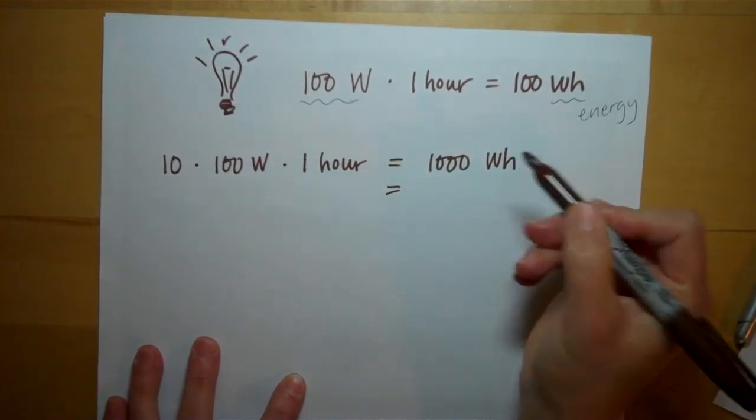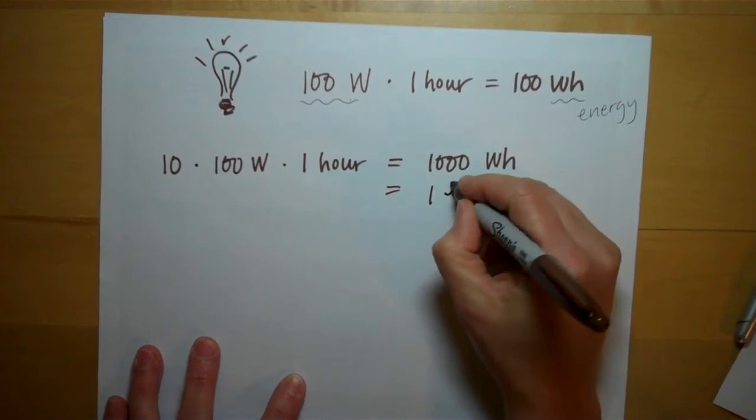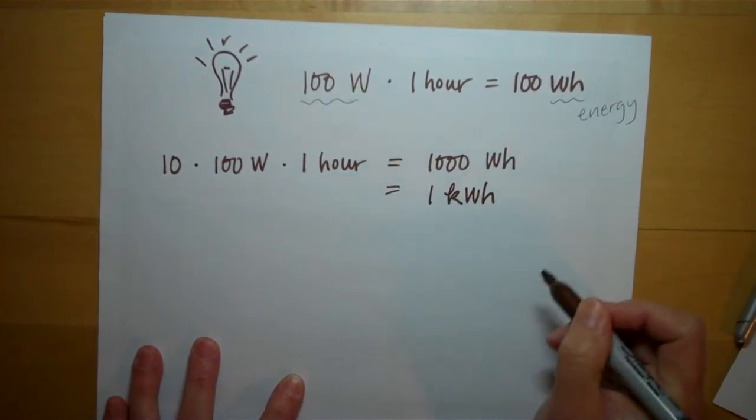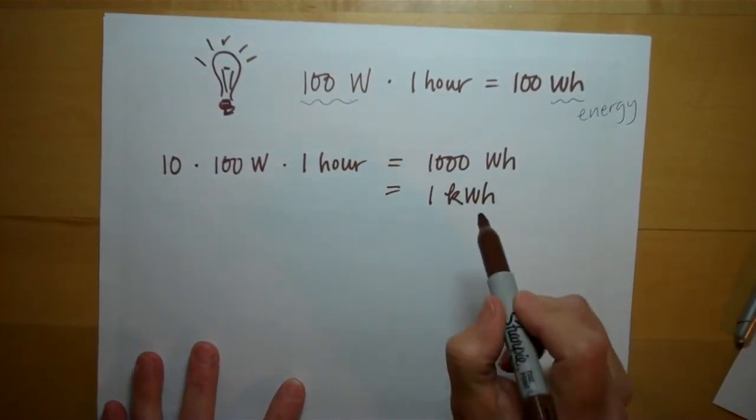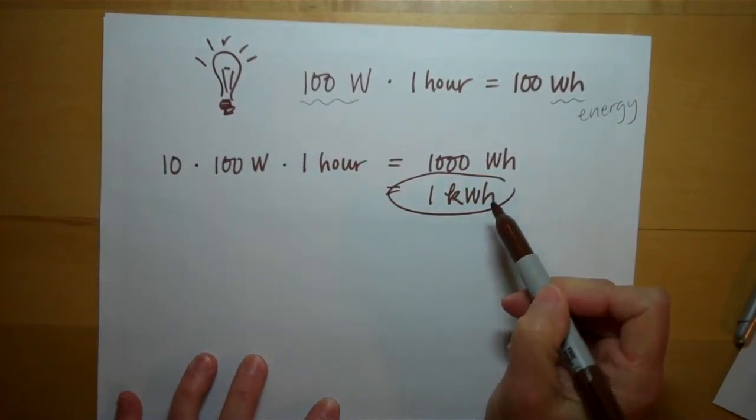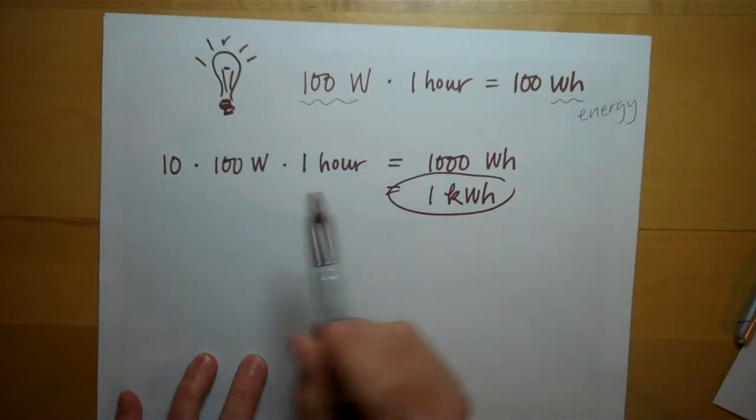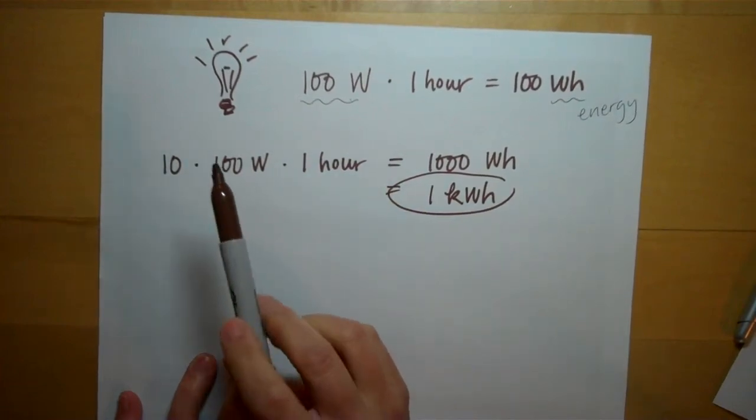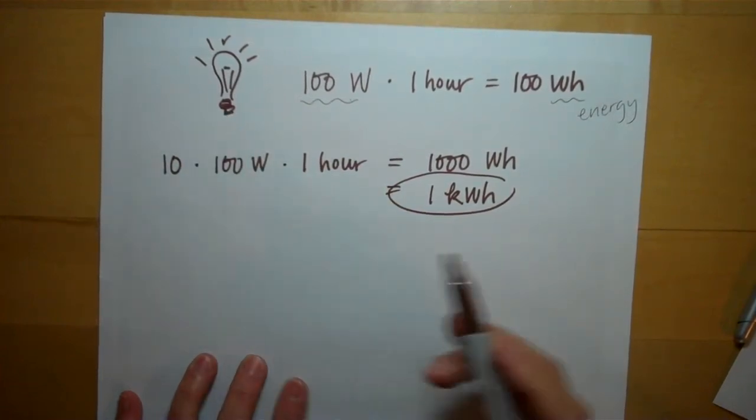1,000 is 10 to the 3, which is kilo. So you've used 1 kilowatt-hour of energy. So that's how you can think of a kilowatt-hour. A kilowatt-hour is the amount of energy needed to run 10 100-watt light bulbs for an hour.